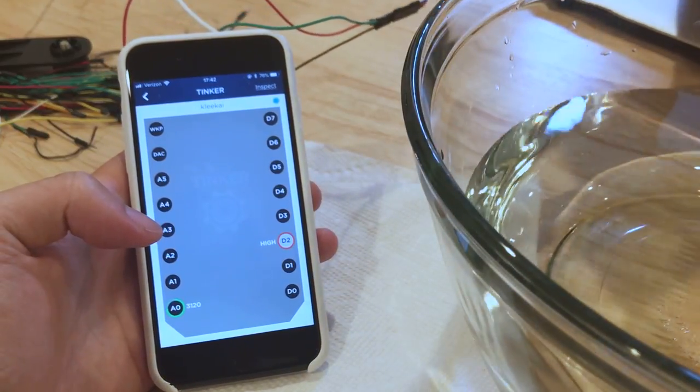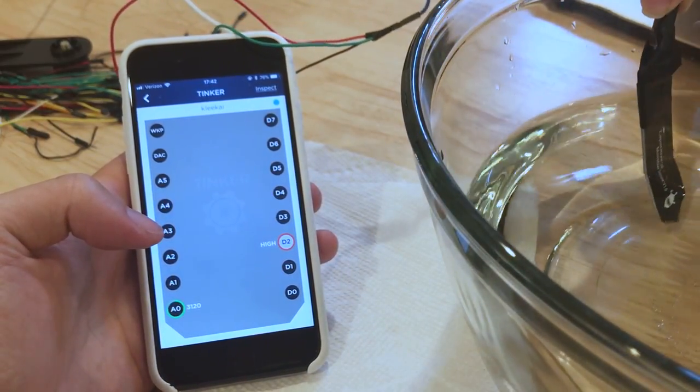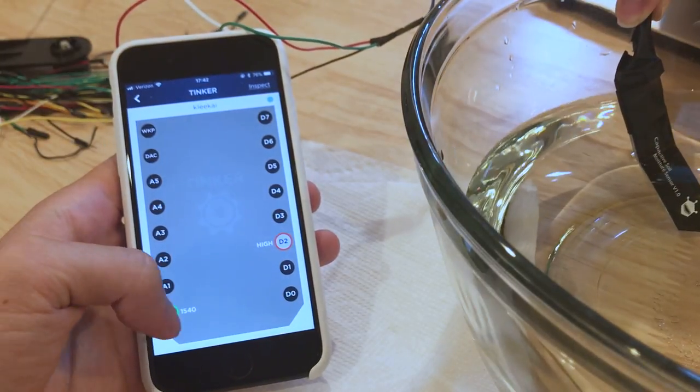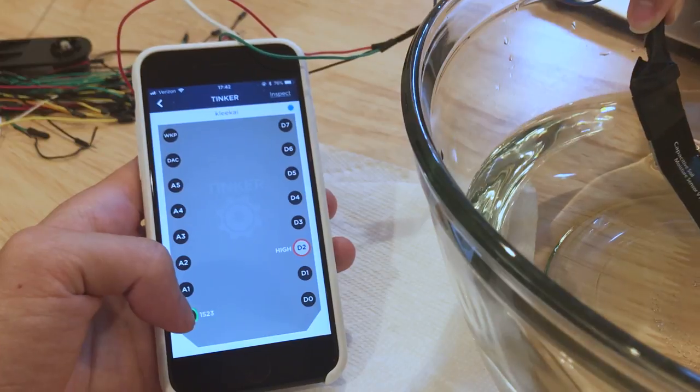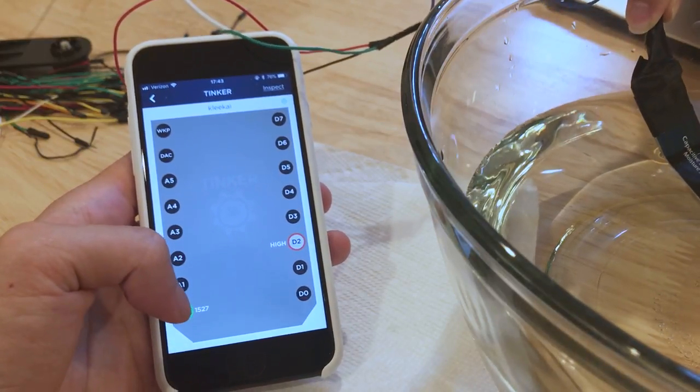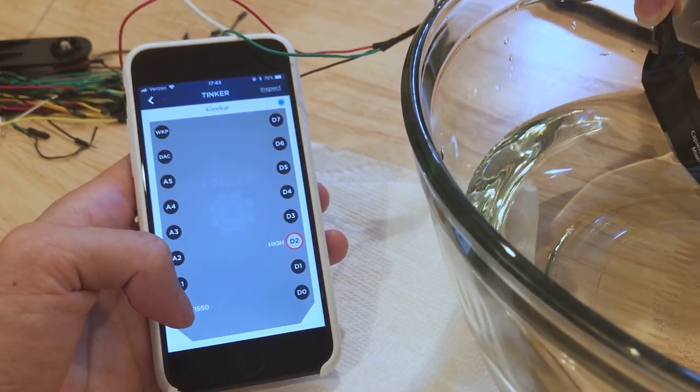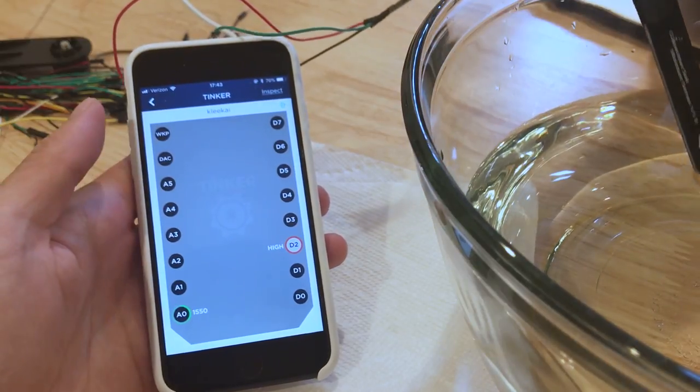Can you put it only up to the white line? Yeah. Now it reads 1530? 1530. 1520. 1523. So about 1520 when it's fully submerged. Okay.